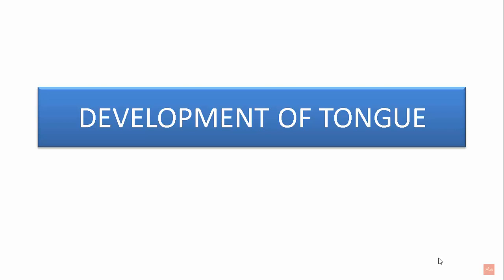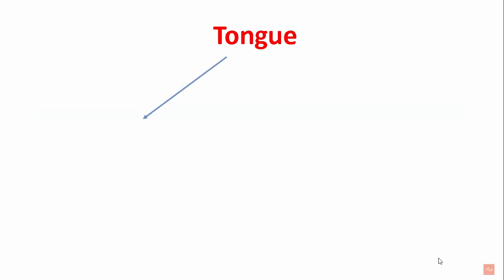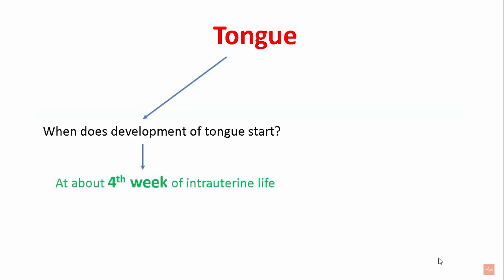Today, we shall learn about the development of the tongue. When does the development of tongue start? It starts at about the fourth week of intrauterine life. And how is it formed? Let's know about it now.